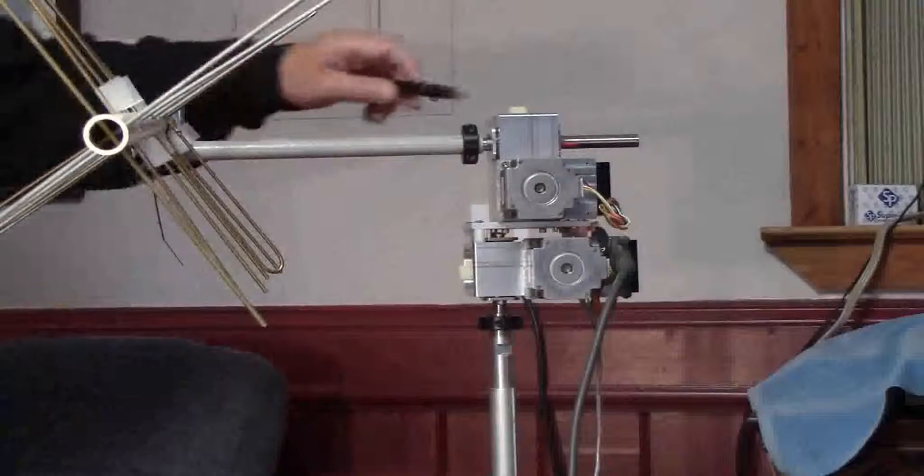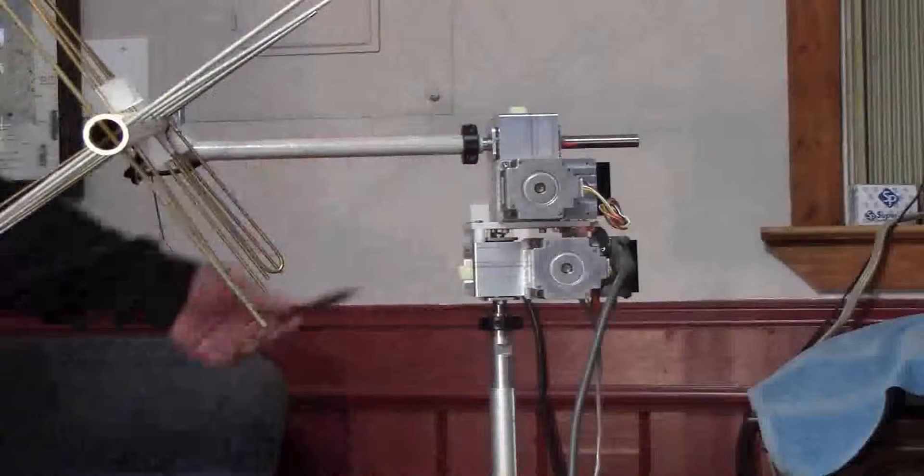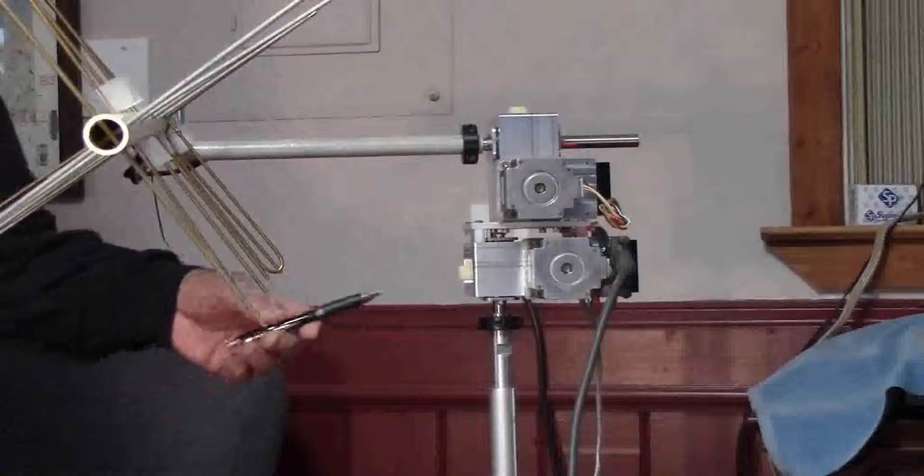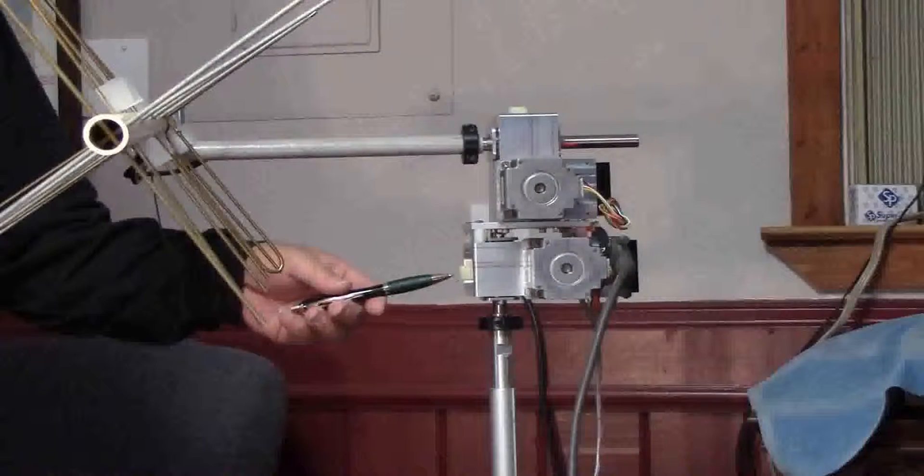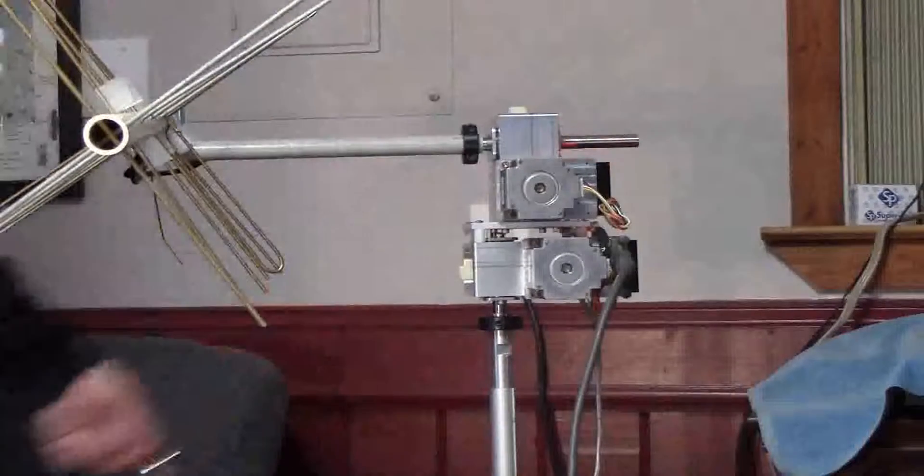So here's the elevation gearbox, motor, and the motor driver. The azimuth gearbox is the very same thing, only it's oriented so that you can get azimuth. So here's the gearbox, the motor, and on the other side is the driver.